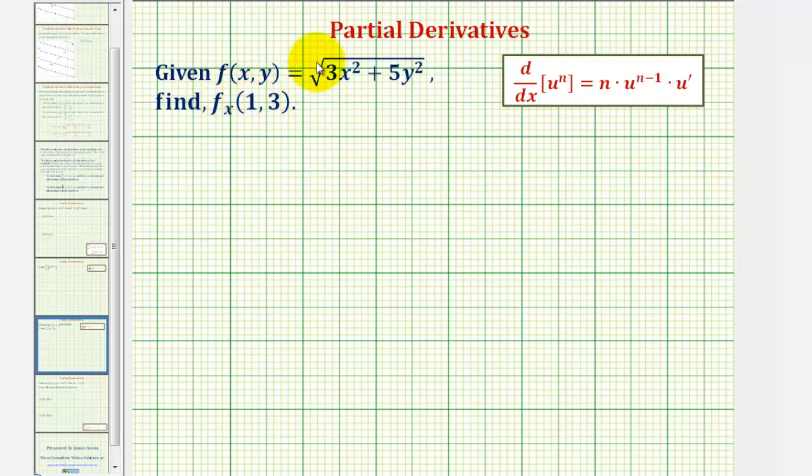We're given f(x, y) equals the square root of the quantity 3x² + 5y². We want to find the partial derivative of f with respect to x at the point (1, 3). This would give us the slope of the tangent line on the surface at the point when x is 1 and y is 3 in the x direction.